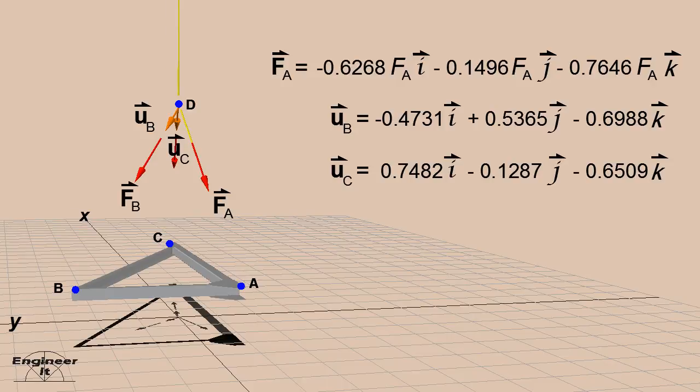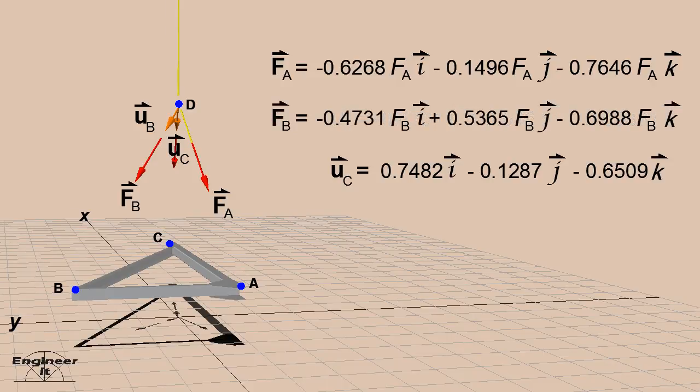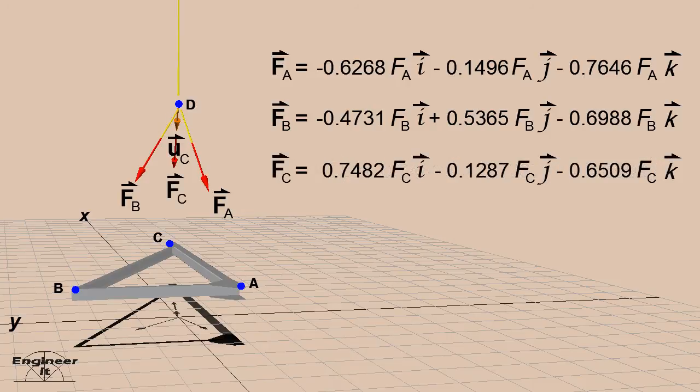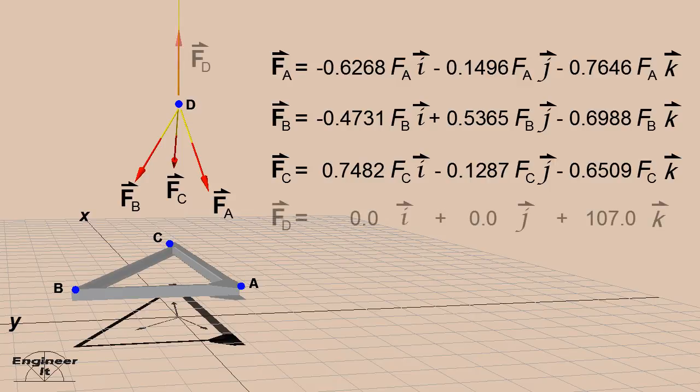Continue solving for forces FB and FC. Include the force FD pulling upward at point D. Since vector FD has units of pounds, the magnitude of FA, FB, and FC will be in pounds as well.